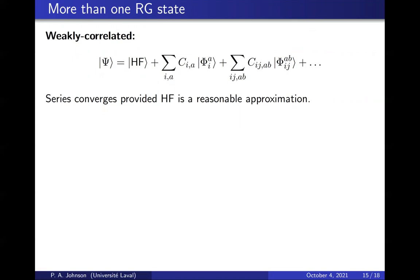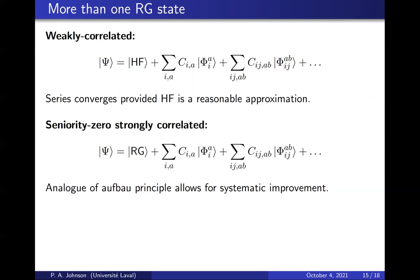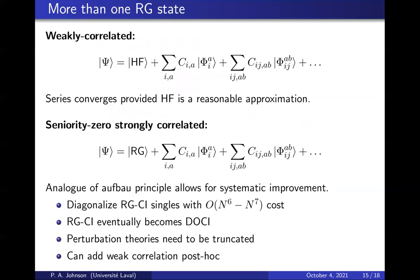Start from one RHF Slater determinant, add in the excited states, and you have a short expansion for a weakly correlated system. For a strongly correlated seniority zero system, you start from RG and you systematically add in small excitations, and that will systematically improve your wave function until whatever approximation of DOCI that you want.